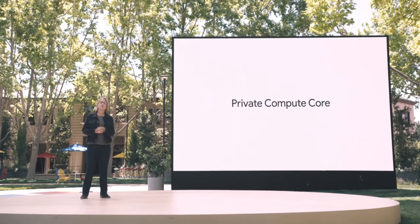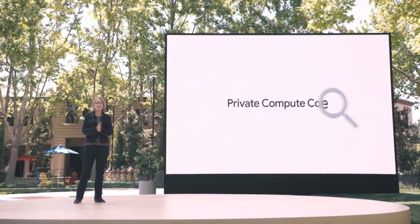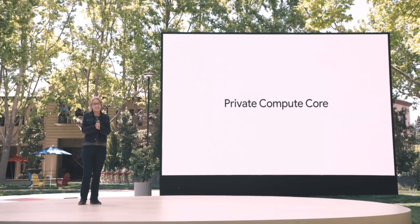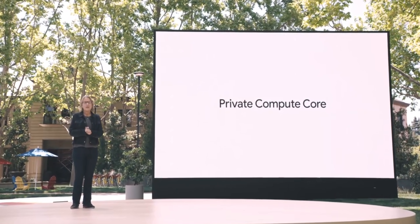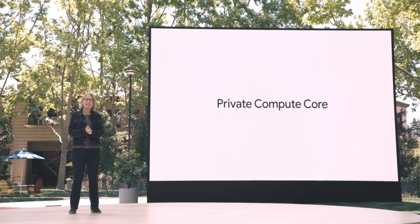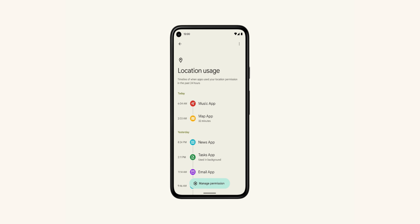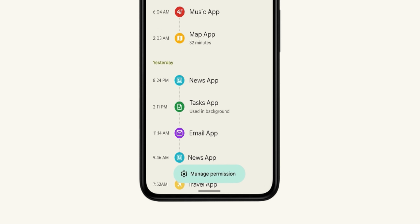First, Android 12 brings Private Compute Core, which will be a separate partition in the OS that will store personal info gathered from features like Now Playing, smart replies, etc. — all on the device itself. Android 12 is also bringing a new privacy dashboard which will show you the number of times apps have accessed the camera, mic, and location in the last 24 hours. It'll also show you a timeline of which apps have accessed these permissions and when.